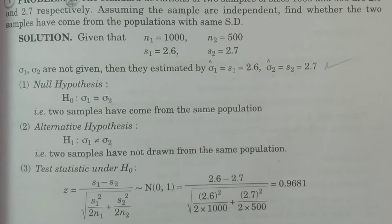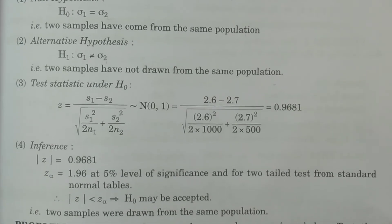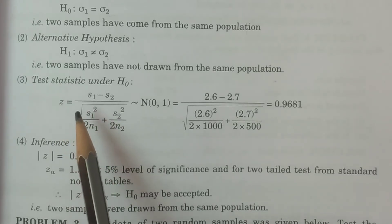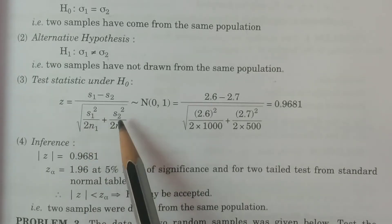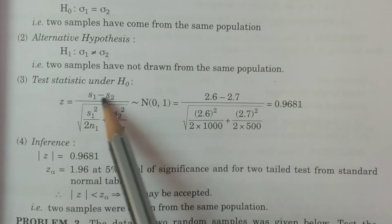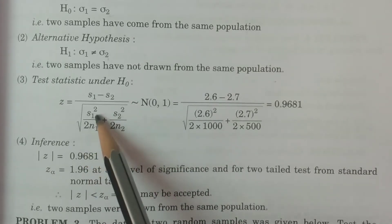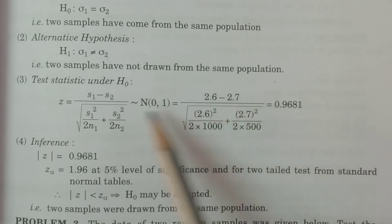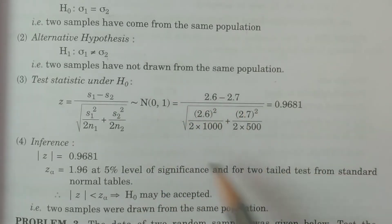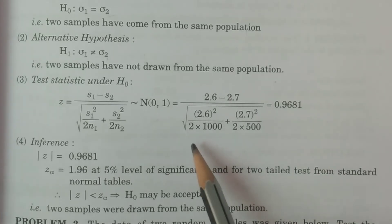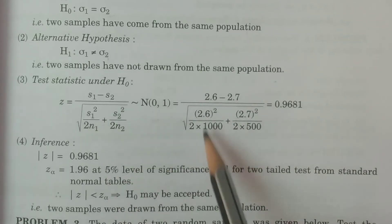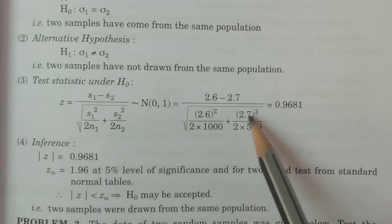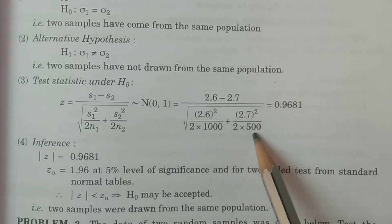Third point: test statistic under H0. Since sigma1 and sigma2 are not known, they are estimated with S1 and S2. Therefore, the formula is Z = (S1 − S2) / sqrt(S1² / 2N1 + S2² / 2N2), which follows N(0,1). Substituting the values: Z = (2.6 − 2.7) / sqrt(2.6² / (2×1000) + 2.7² / (2×500)).